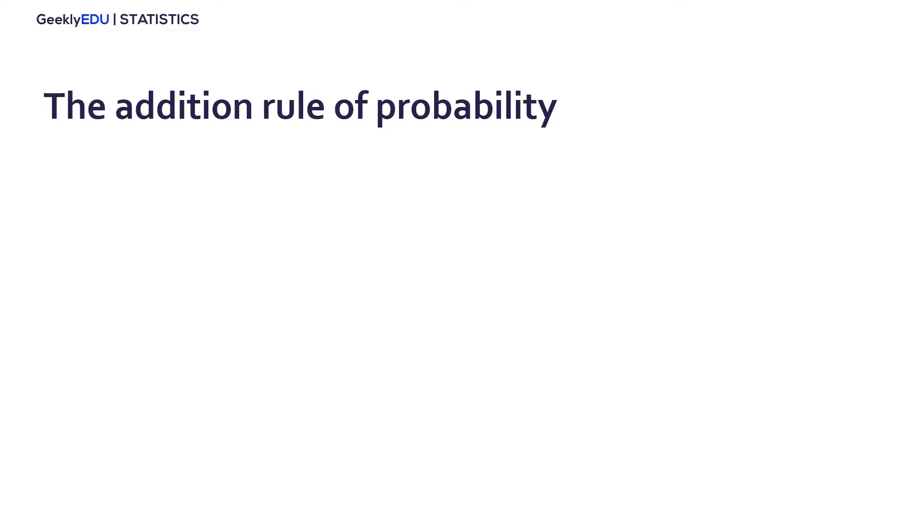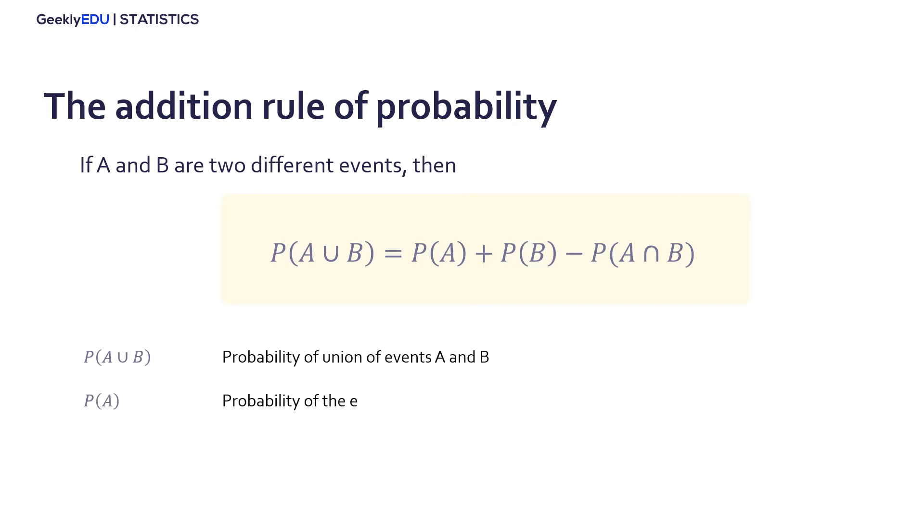The addition of the probability of two events A and B will give us a new set of probabilities, the probability of A union B, that is equal to the probability of the event A, plus the probability of the event B, minus the probability of the simultaneous occurrence of events A and B.